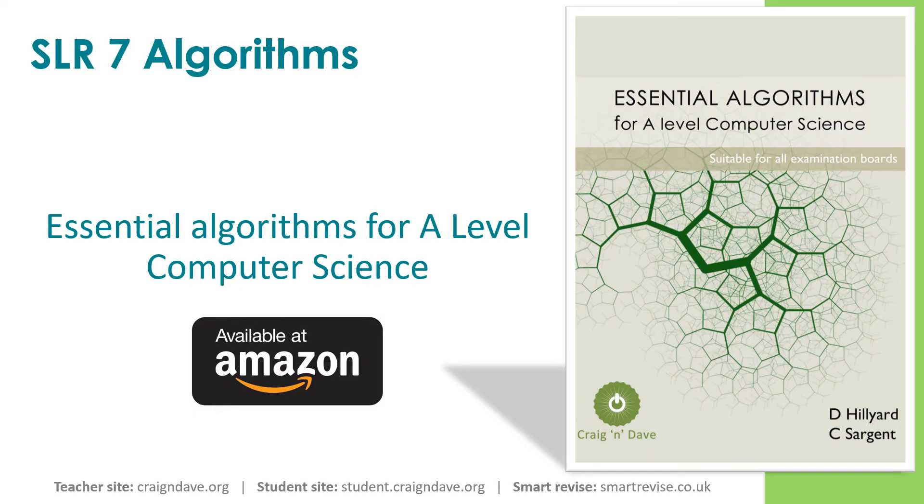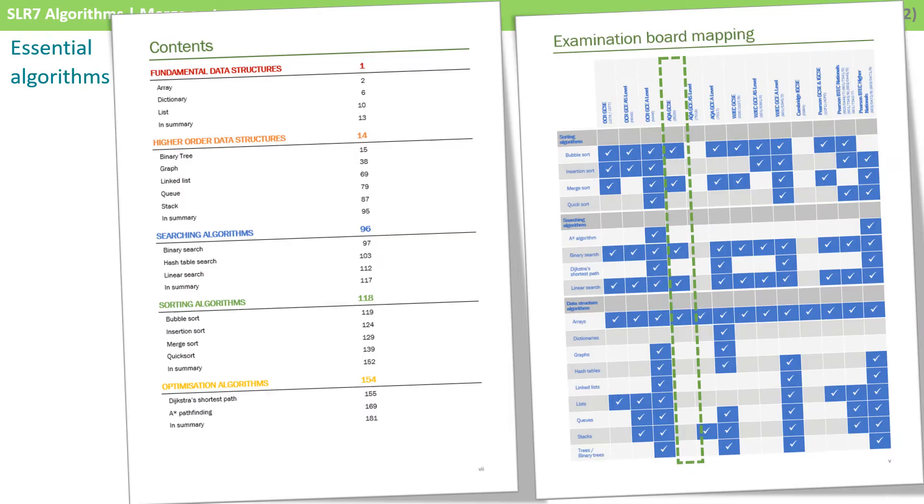We know that algorithms are some of the hardest parts of any computer science specification, so we have written a book called Essential Algorithms for A-level Computer Science, which is available on Amazon. While the title of the book suggests this is only for A-level, you can see here from the examination board mapping page that we have chapters which cover every algorithm you're required to know for the GCSE.